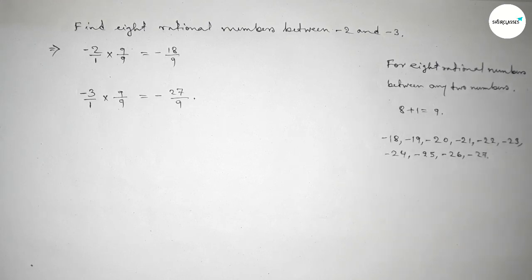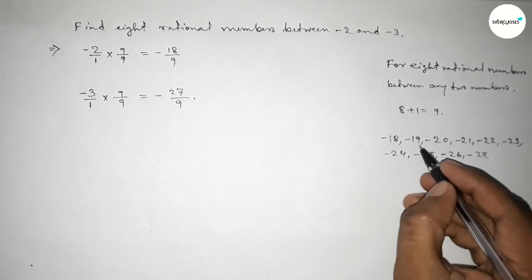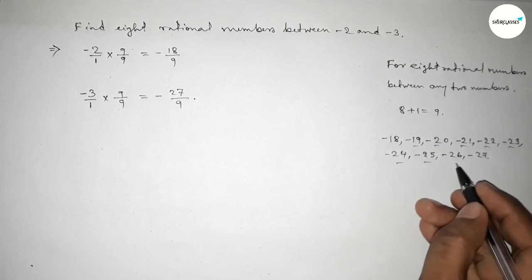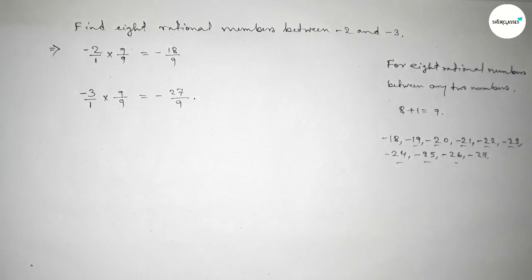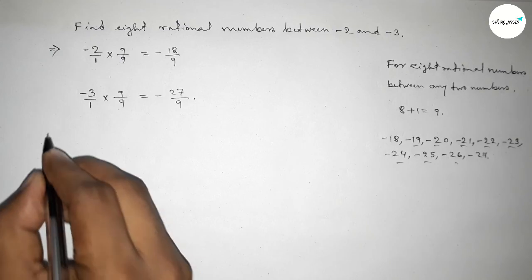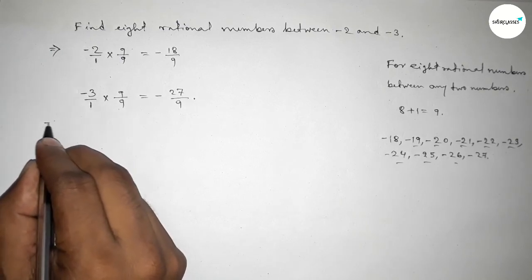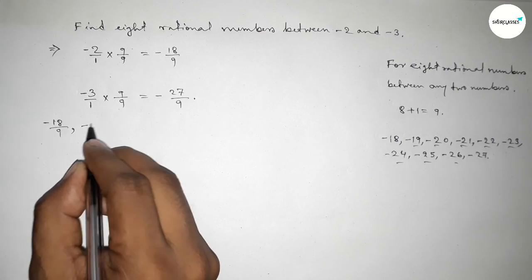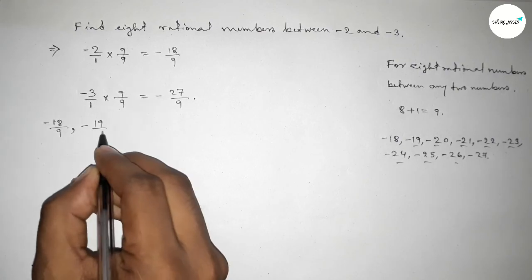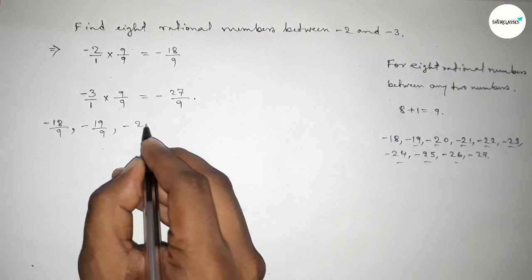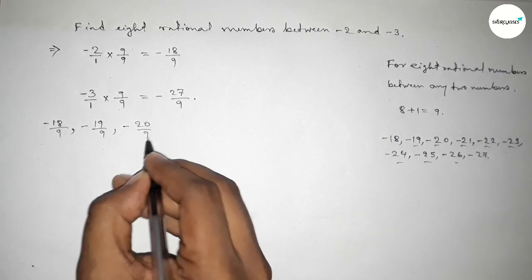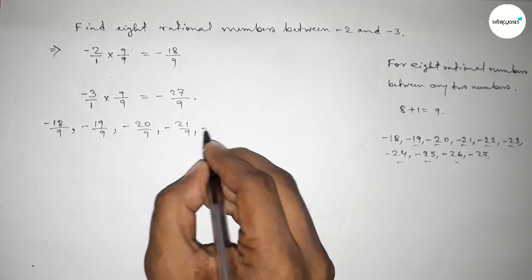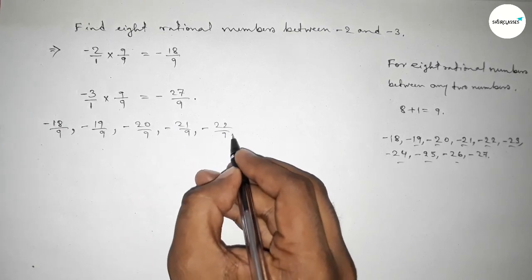Among these, these are the eight negative integers. Now forming all the rational numbers: minus 18 over 9, minus 19 over 9, minus 20 over 9, minus 21 over 9, minus 22 over 9.